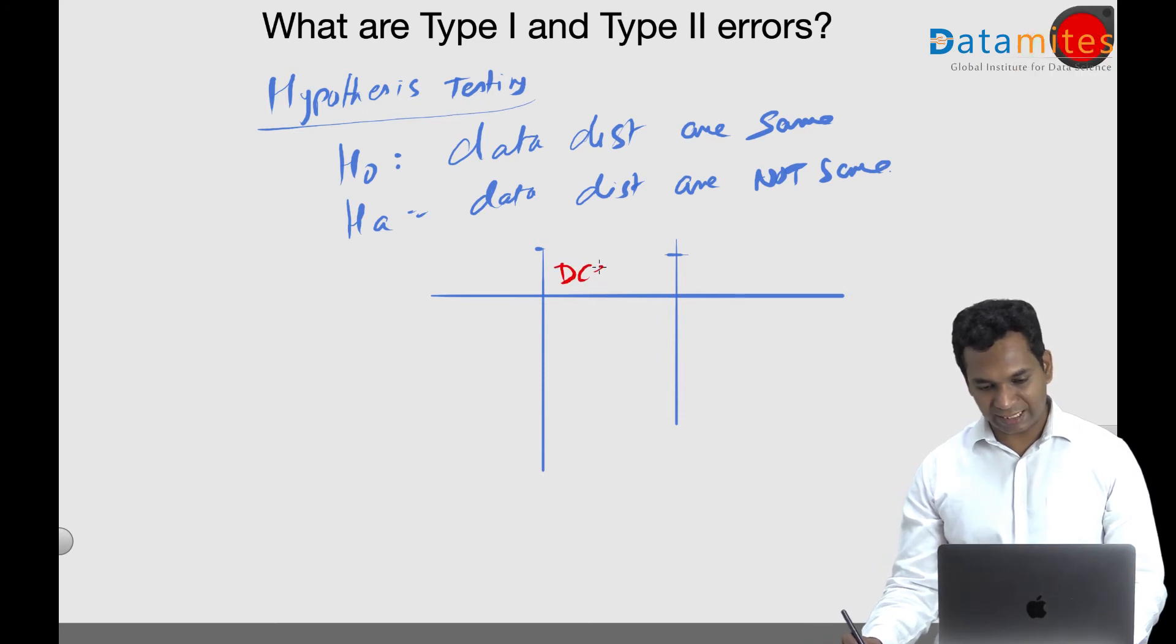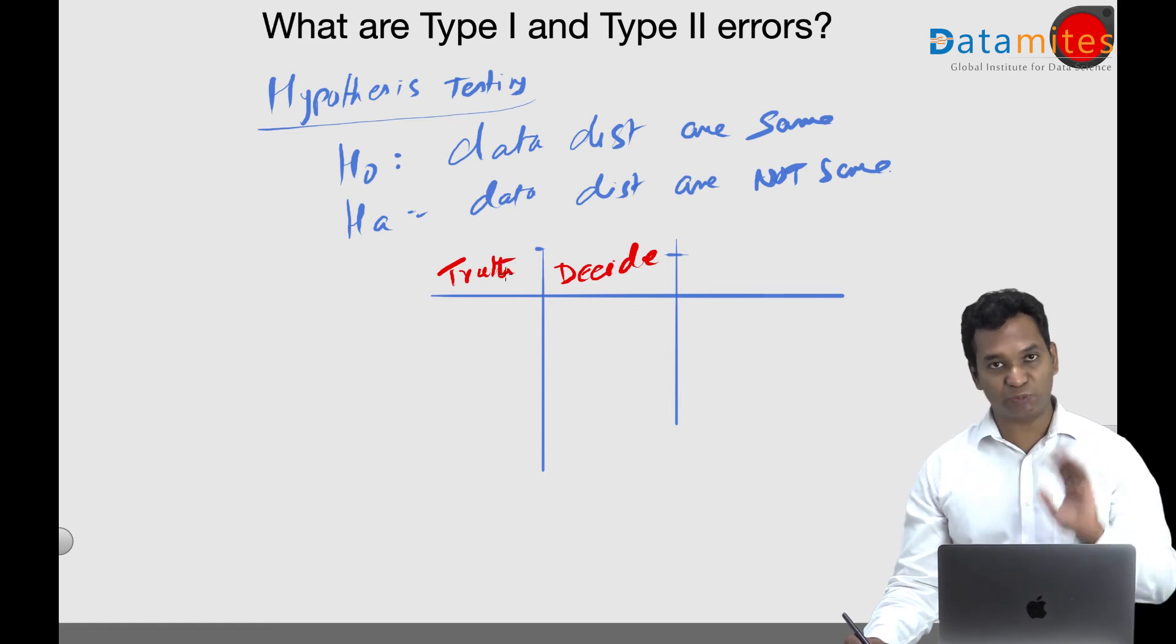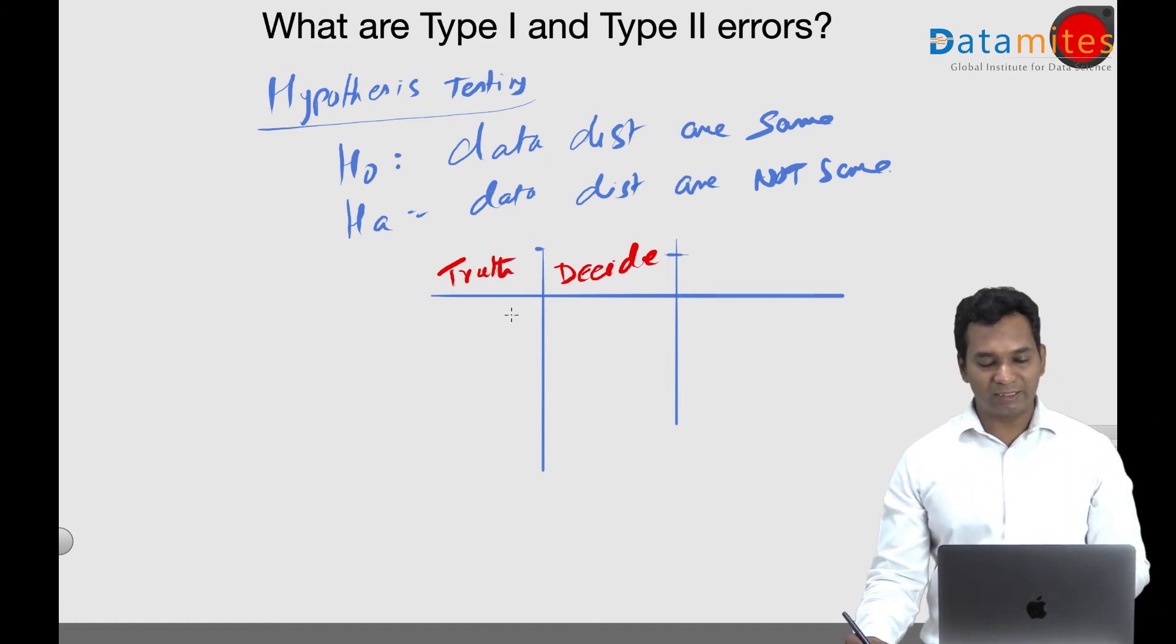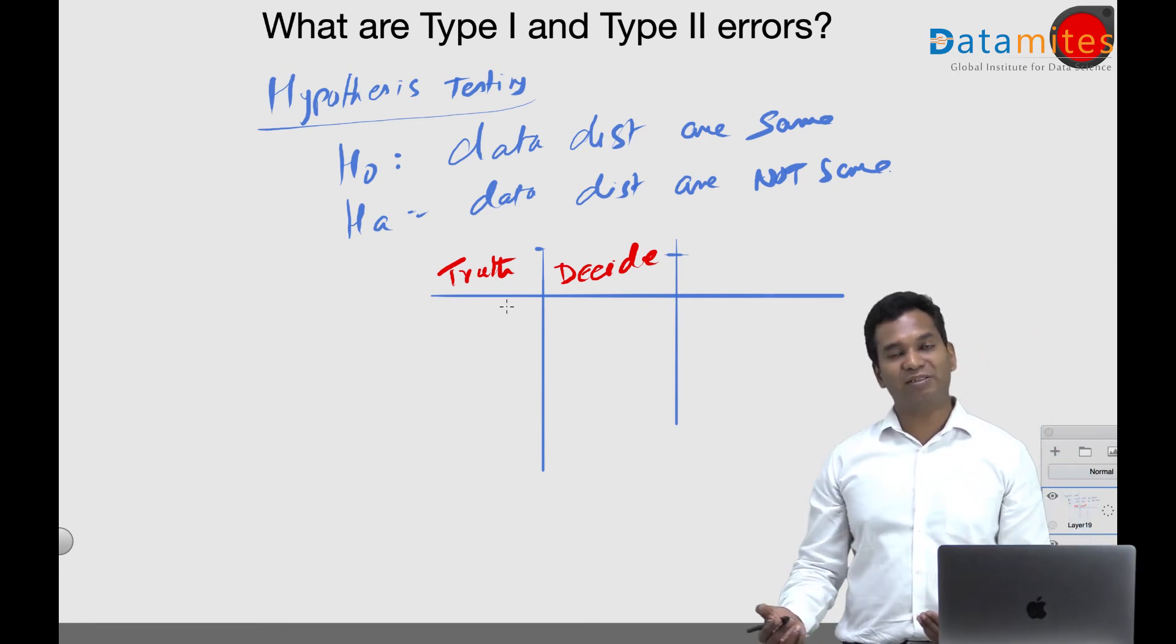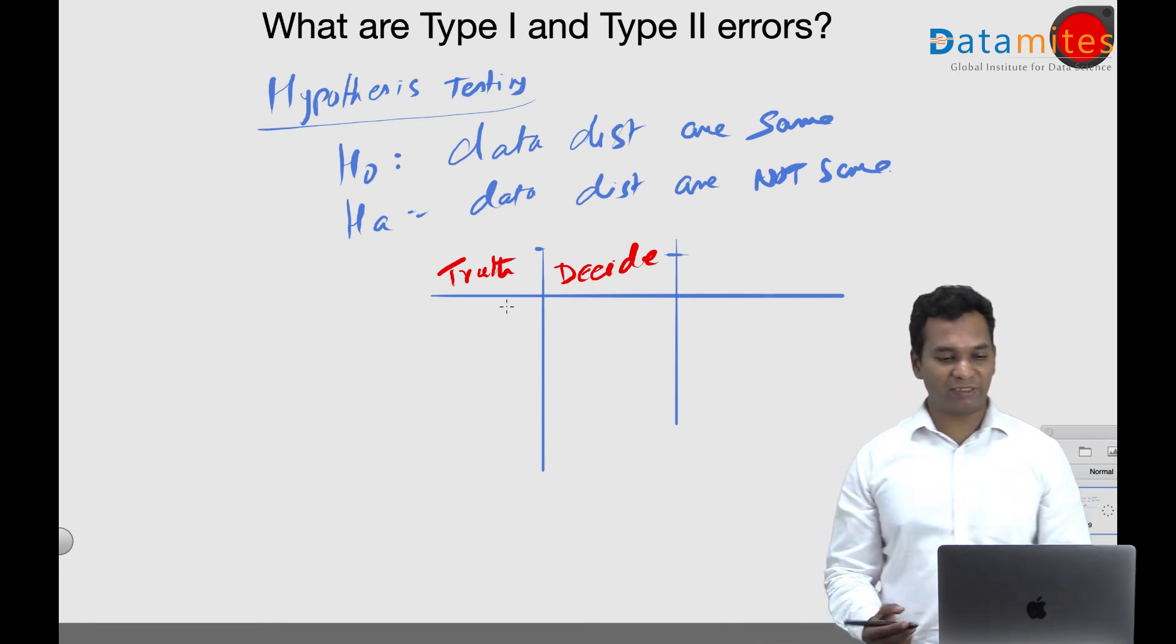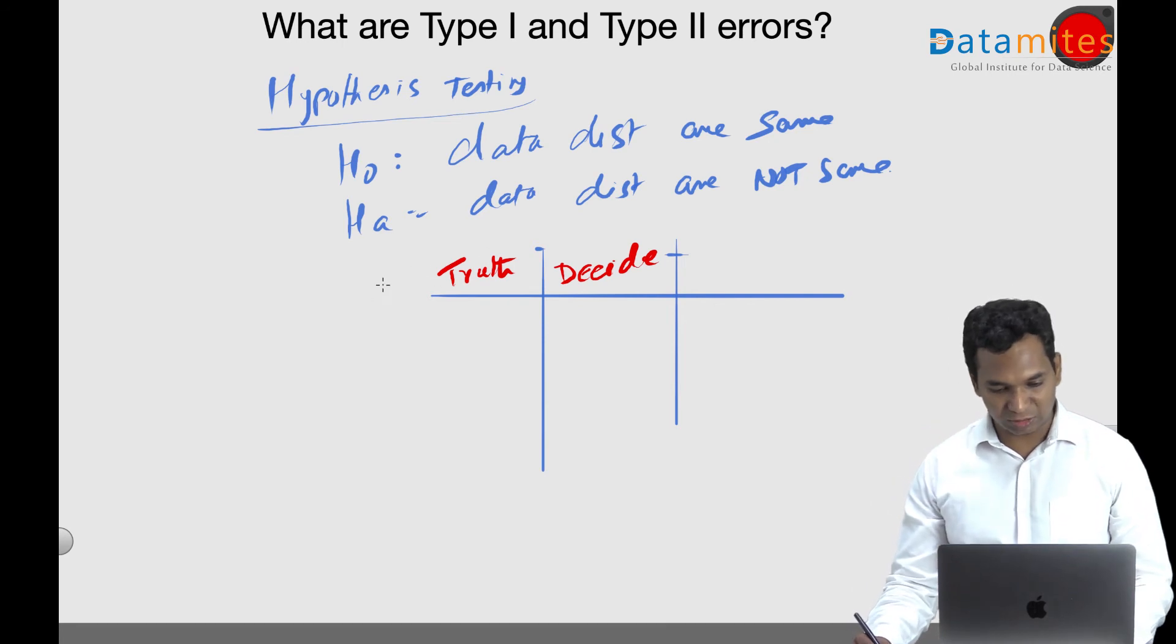Most often we don't know the original because if you know that, then there is no point of even doing the hypothesis testing. But if the actual is null hypothesis and you also decide null hypothesis, then it's a happy situation, isn't it? Whatever actual, you also conclude the same. Great, wonderful.